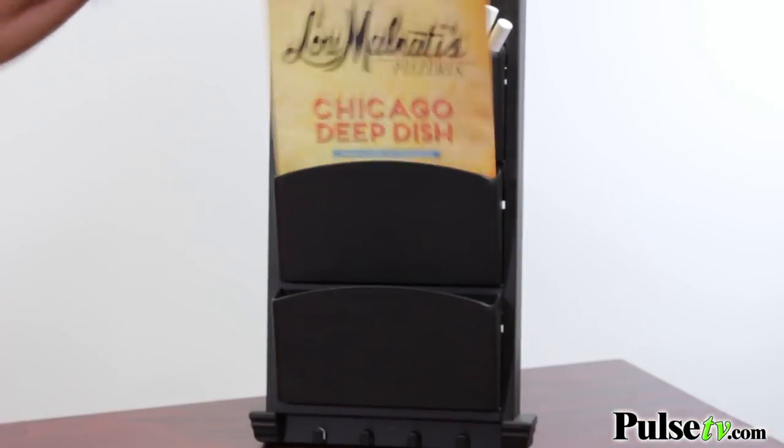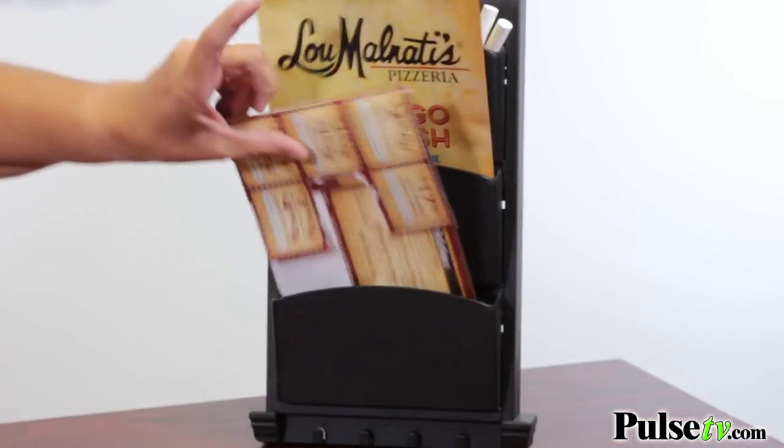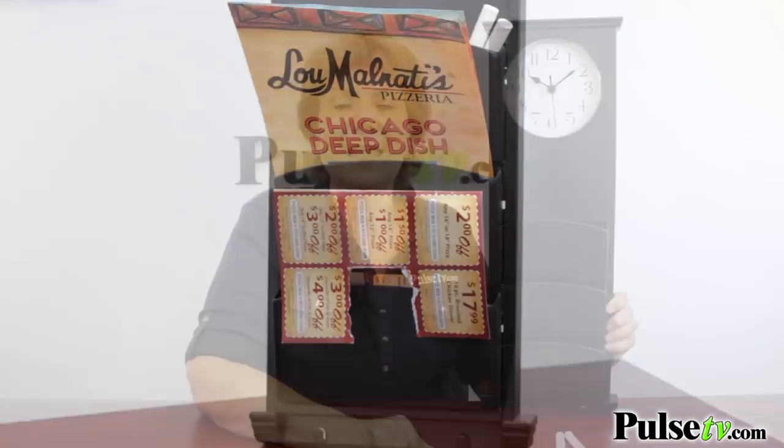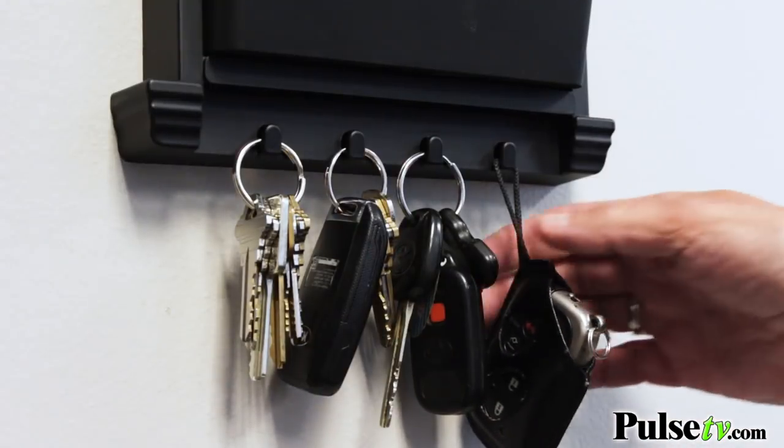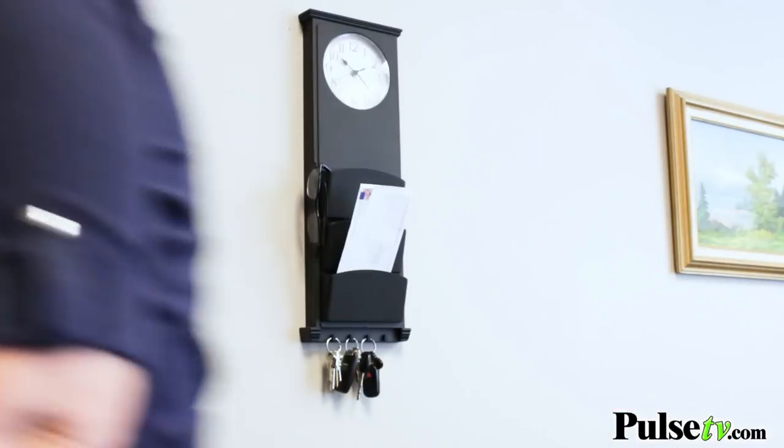First you can see all these different slots. It's great for mail, coupons, menus, any kind of paperwork you want to keep organized. And with four key rings at the bottom you can hang everybody's keys in the family right there so they're ready to go.